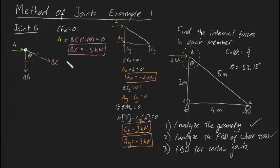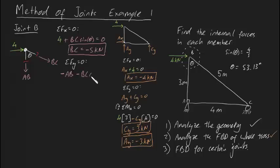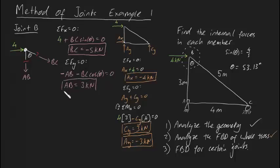Sum of forces in the y direction equals zero. Both internal forces have negative y components: AB is purely downwards, and BC contributes BC cosine theta downwards. Substituting BC equals minus five, we get AB equal to minus minus five cosine 53.13, which is just three kilonewtons. We've only analyzed one joint and already found the internal forces in two members.